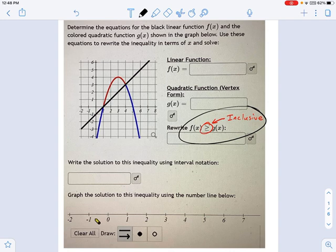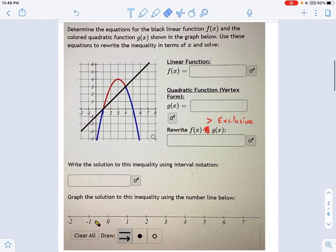This is the very first thing to look at in this problem. In this case, I want to draw your attention to the fact that it is an inclusive inequality. I wrote that inclusive right here, which means we're going to be using square brackets and we're including the intersections between these two lines. There's another version of this problem which is exclusive.